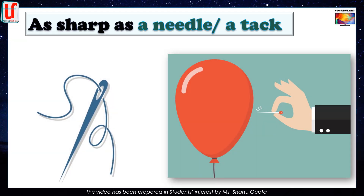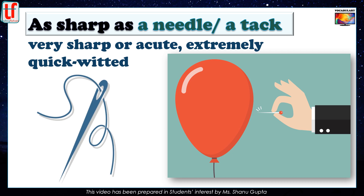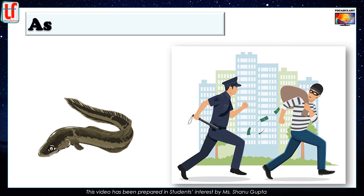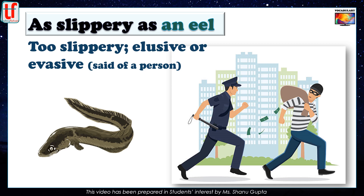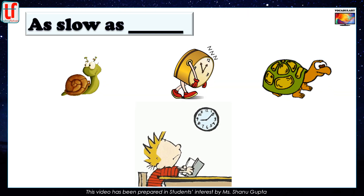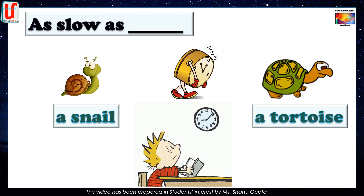As sharp as a needle, or as sharp as a tack. Though this simile could be used for objects which are very sharp, it is more commonly used for mental sharpness or acuteness and is used for someone who is extremely quick-witted. As slippery as an eel. Slimy eels — you can never catch hold of them, they will slip from your hands. Similarly, this expression can describe someone like a thief who just manages to slip away and is very evasive and difficult to catch. As slow as a snail, or as slow as a tortoise — both mean very slow.